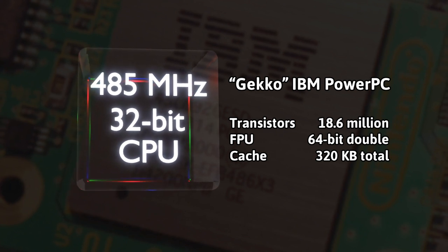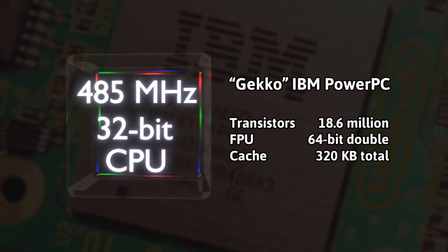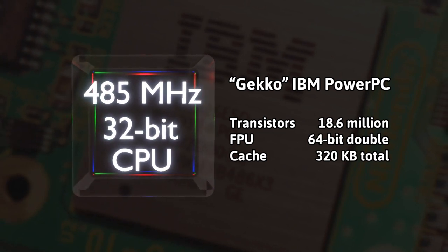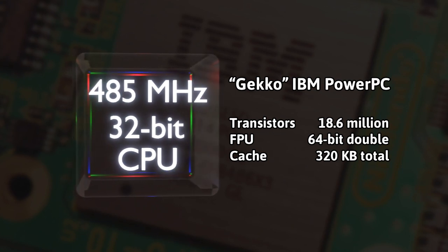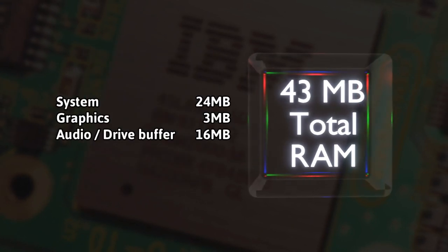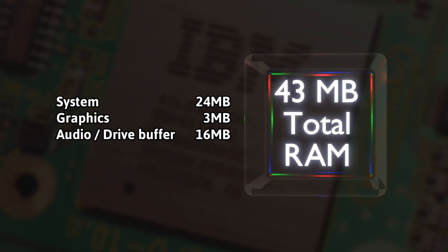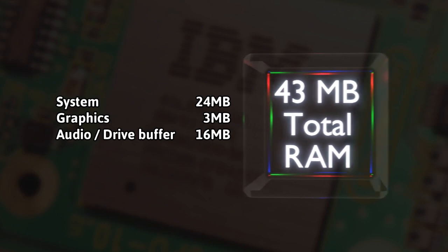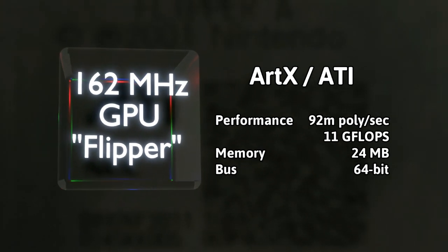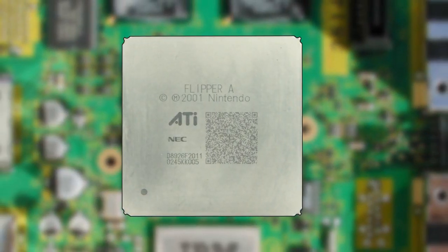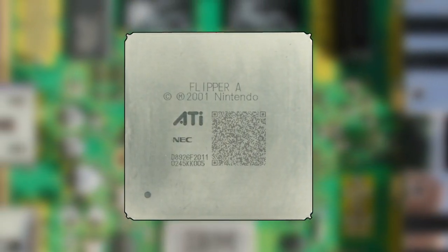The GameCube features a 485MHz 32-bit IBM PowerPC CPU named Gekko with 24MB of system memory. An additional 3MB of memory is dedicated to graphics and another 16MB is dedicated to buffering audio and the GameCube's proprietary mini-DVD-style optical drive. The GPU is a 162MHz chip developed by ArtX. Its code name is Flipper, keeping with the theme of Project Dolphin.